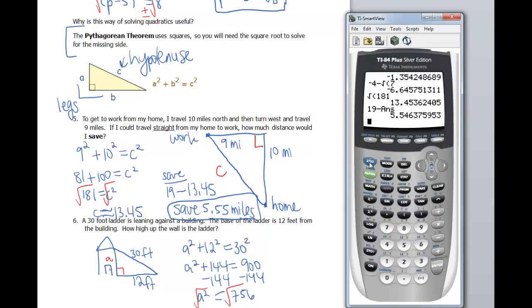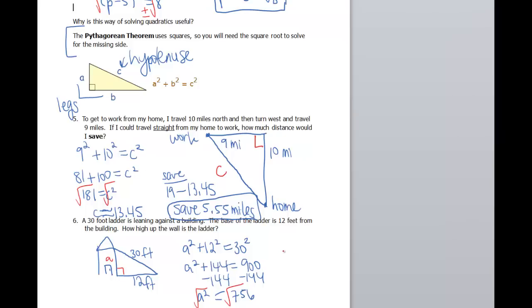So let's go to the calculator then. Square root of 756. This gives us a total of 27 point, we'll say 5. So A is 27.5, and this would be in feet.